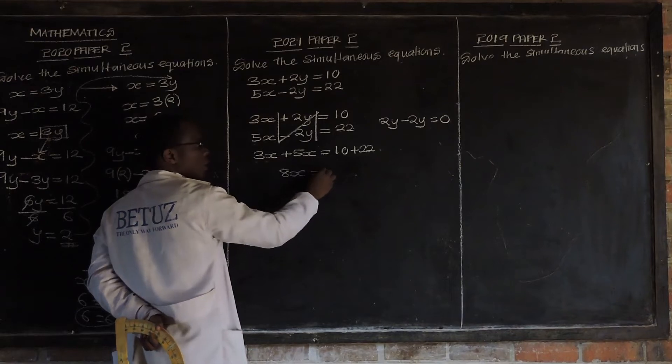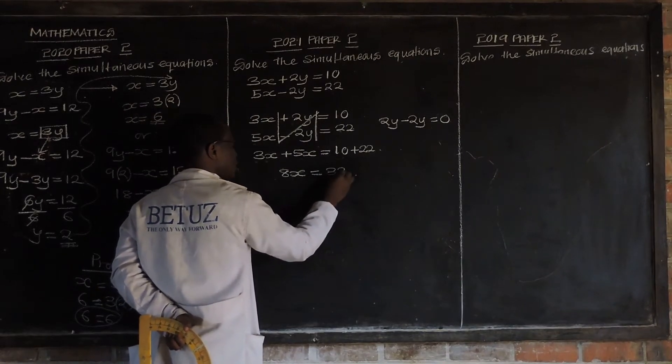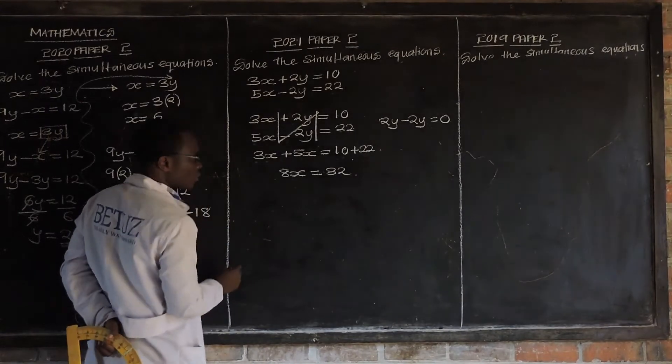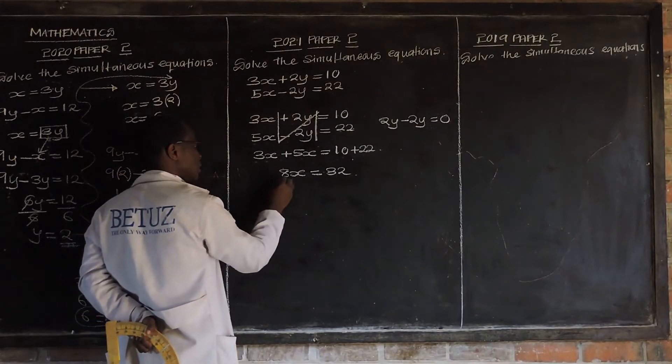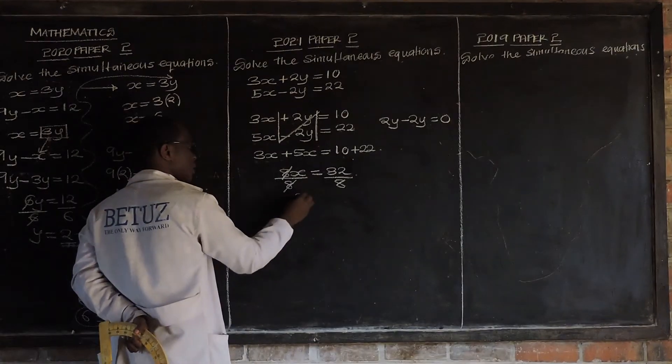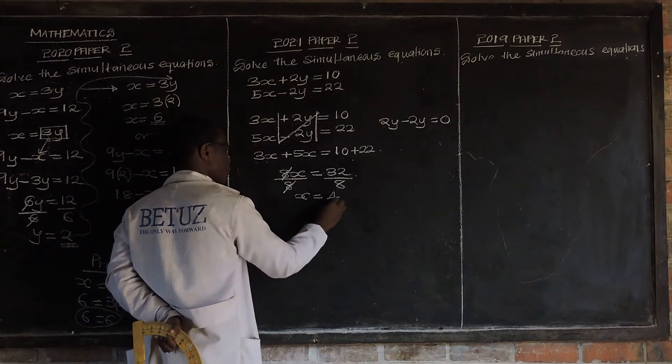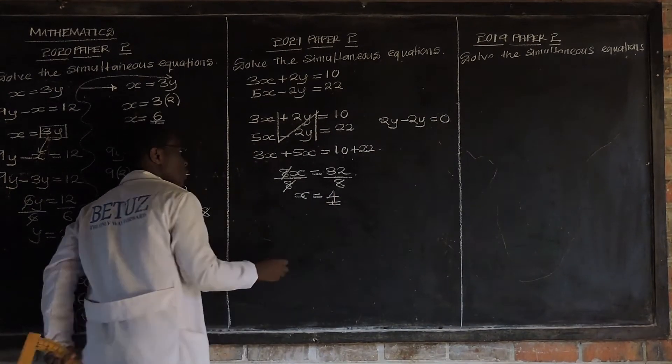3x plus 5x is equal to 10 plus 22. So, 3x plus 5x is equal to what? 8x is equal to. What is 10 plus 22? 32. Then, for us, we have x divided by 8. These two are going to be 32. So, x is equal to 32 divided by 8. So, x is equal to 4.